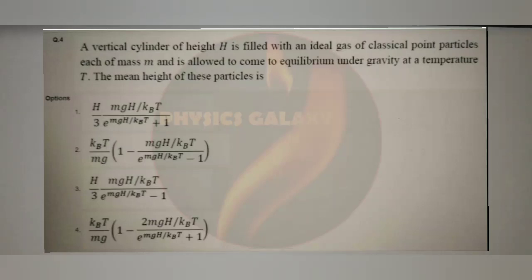Welcome again to our channel Physics Galaxy. This problem is from the TIFR 2022 physics paper. The problem: a vertical cylinder of height H is filled with an ideal gas of classical point particles of mass M, allowed to come to equilibrium under gravity at a temperature T. The mean height of these particles is asked, and four options are given.